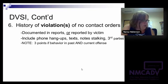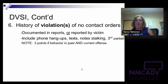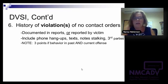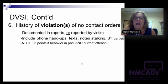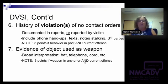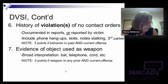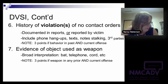Item seven is evidence of an object used as a weapon. This is a broad interpretation — it doesn't have to be a gun or a knife, though those are the highest indicators of risk. It can also be a bat, a telephone — one of our clients knocked his victim's teeth out when she tried to call 911. Strangling, tying with a cord, any object used as part of an assault, both in the current and prior offenses, is a point item. The use of a weapon as part of an assault is an important risk factor.